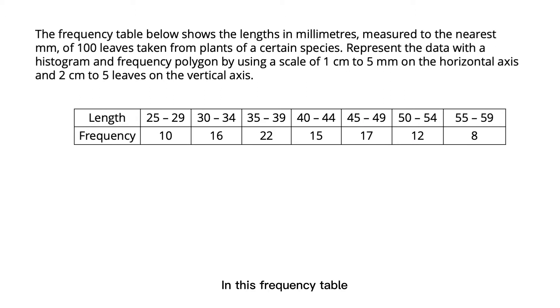In this frequency table, we have two rows. The first row represents the class interval of 5 from 25 to 29, 30 to 34, to 55 to 59, which are the length in millimeters of 100 leaves. And the second row is the frequency, that is the number of leaves.